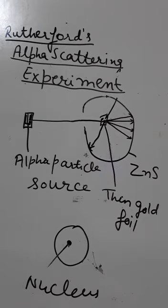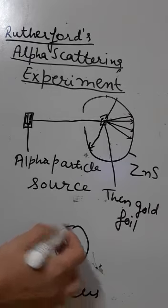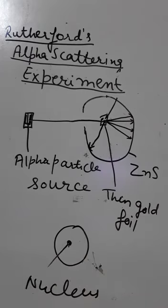Since the atom is neutral, the number of electrons is equal to the number of protons which are present inside the nucleus.